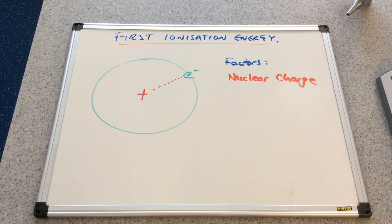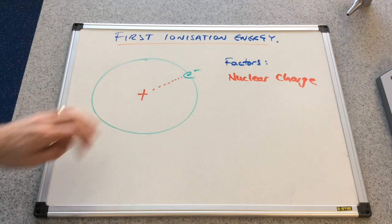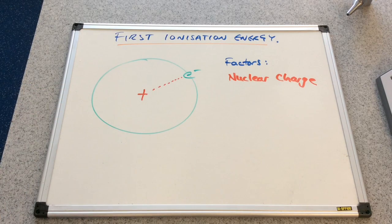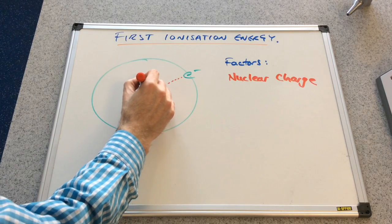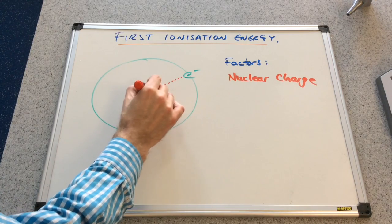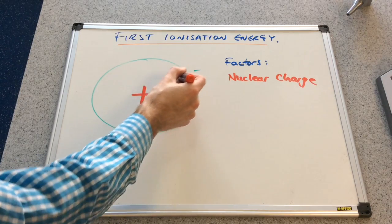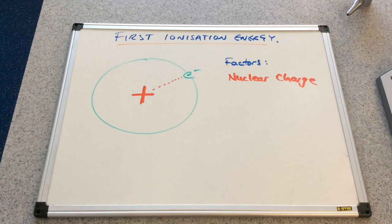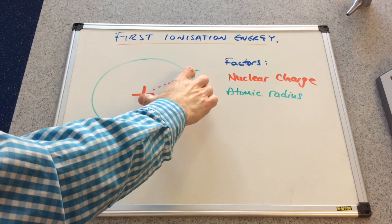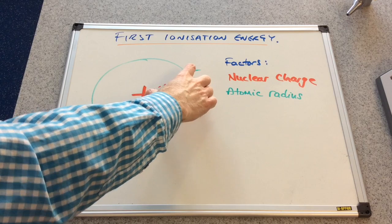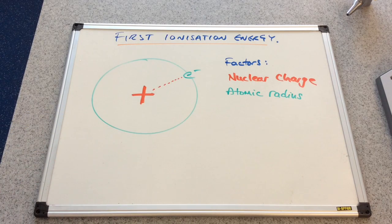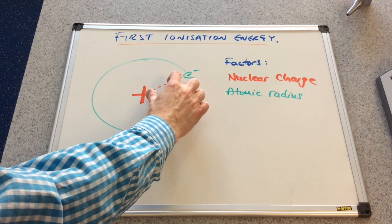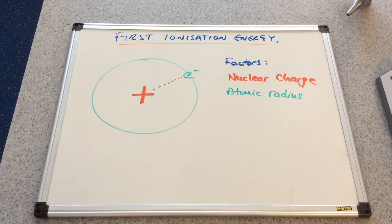The first factor is nuclear charge — that's simply how many protons are in the nucleus. As the number of protons increases in the nucleus, the nuclear charge increases, and that will increase the attraction between the nucleus and the outermost electron. Atomic radius also has to be a factor — the distance between the nucleus and the outermost electron will influence the energy required to take the electron out. The closer the electron is to the nucleus, the stronger the force of attraction and therefore more energy will be required.